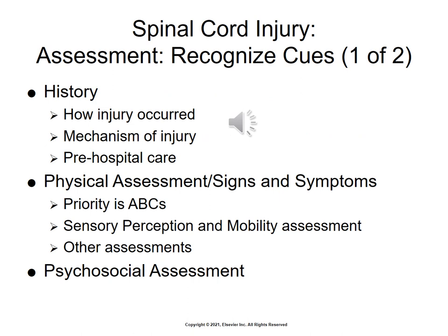When recognizing cues in a spinal cord injury, with history taking it's important to determine how the injury occurred, the mechanism of injury, and any pre-hospital care. Physical assessment signs and symptoms and prioritization of care management will be around your ABCs. Also important is continued sensory perception and mobility assessment to determine if there's any worsening of status, and don't forget your psychosocial assessment. Make sure you're asking about the rotation, position of the injury, symptoms, immobilization devices used like a C-collar or backboard, any pre-hospitalization treatment and medications, previous medical-surgical history, and current medications.